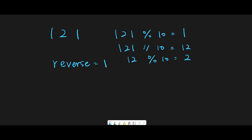Our problem is that reverse is currently 1. If we just add 2 to reverse we get 3, but we want 12. So every time, we multiply reverse by 10 first — so 1 becomes 10 — and then add 2 to get 12. That's why every time we multiply 10 to reverse and then add the new digit.